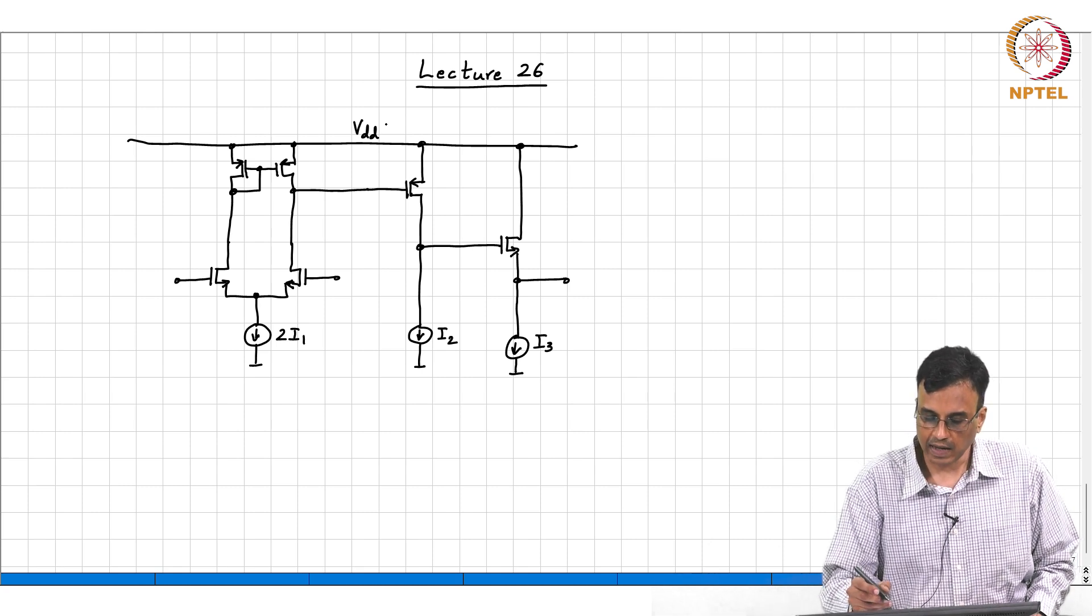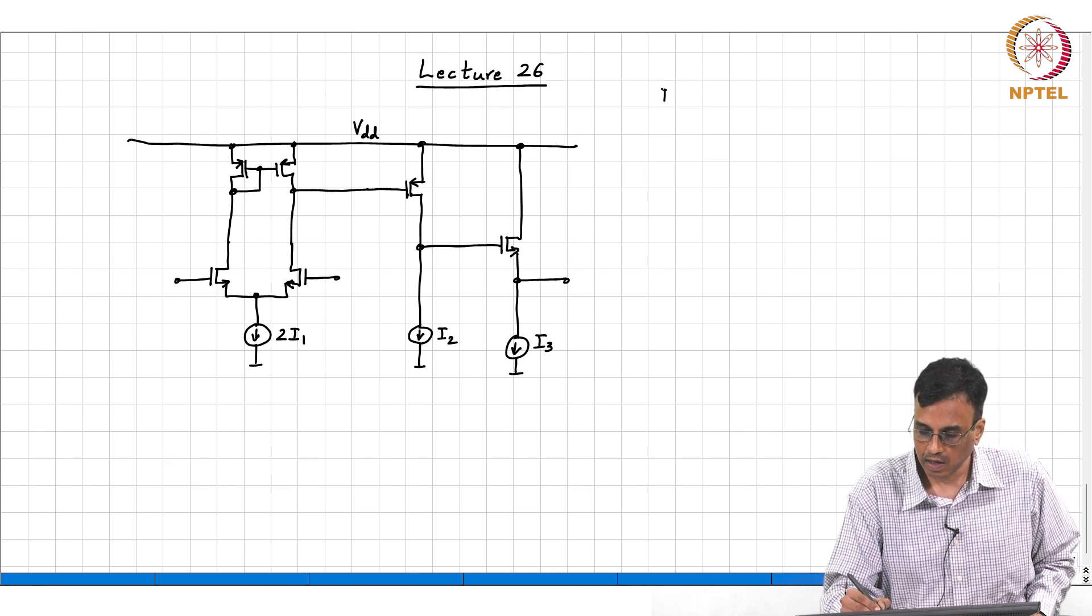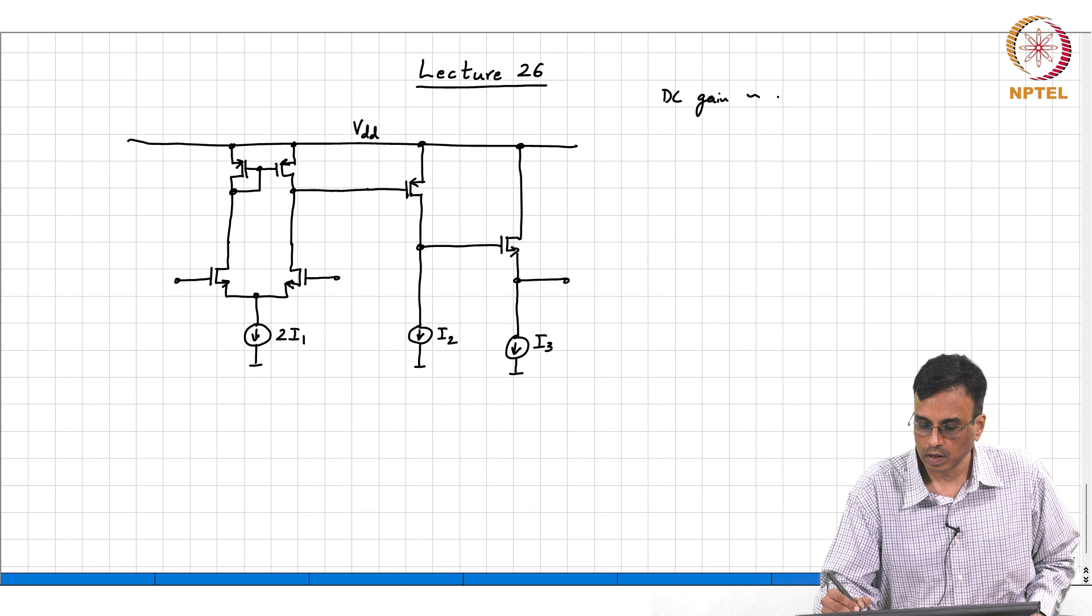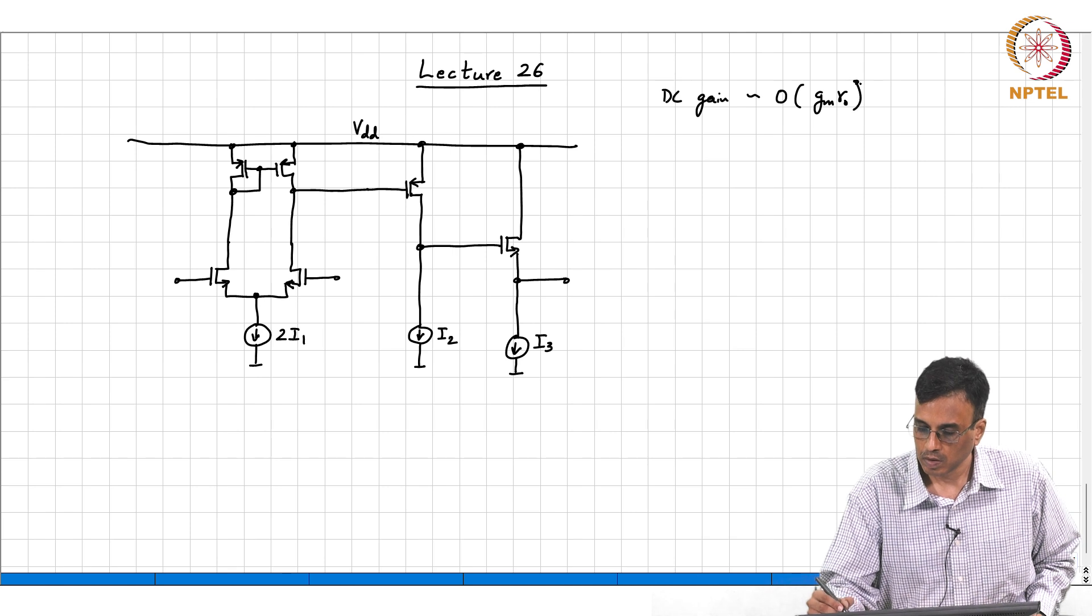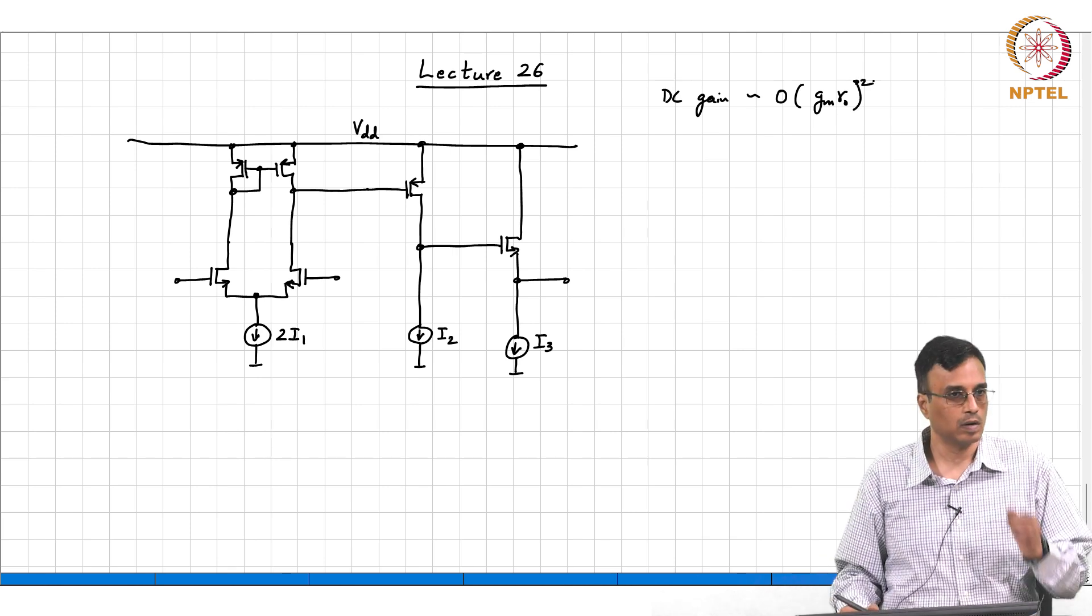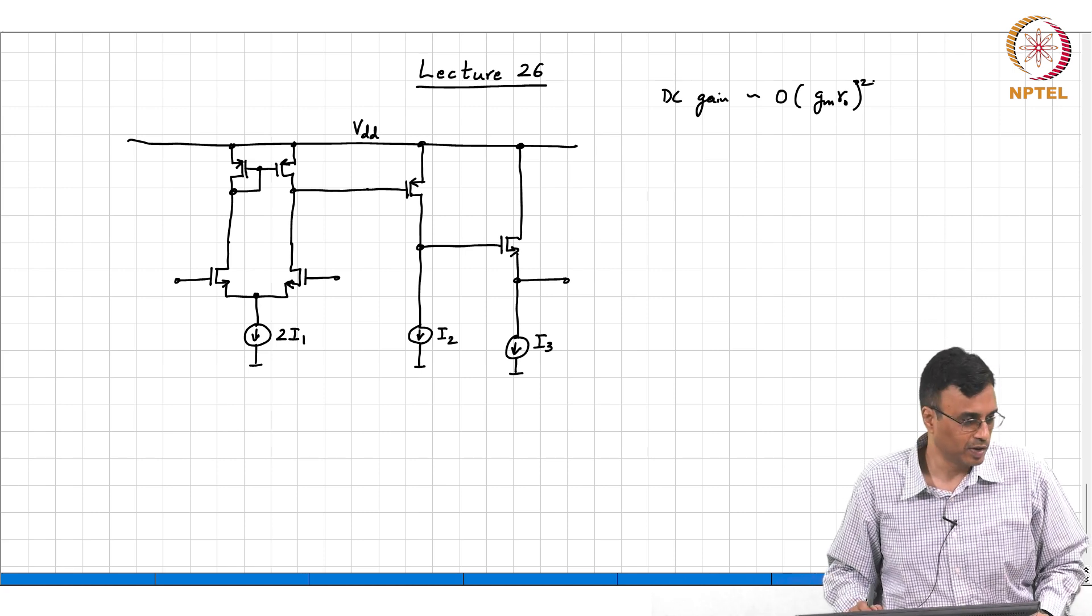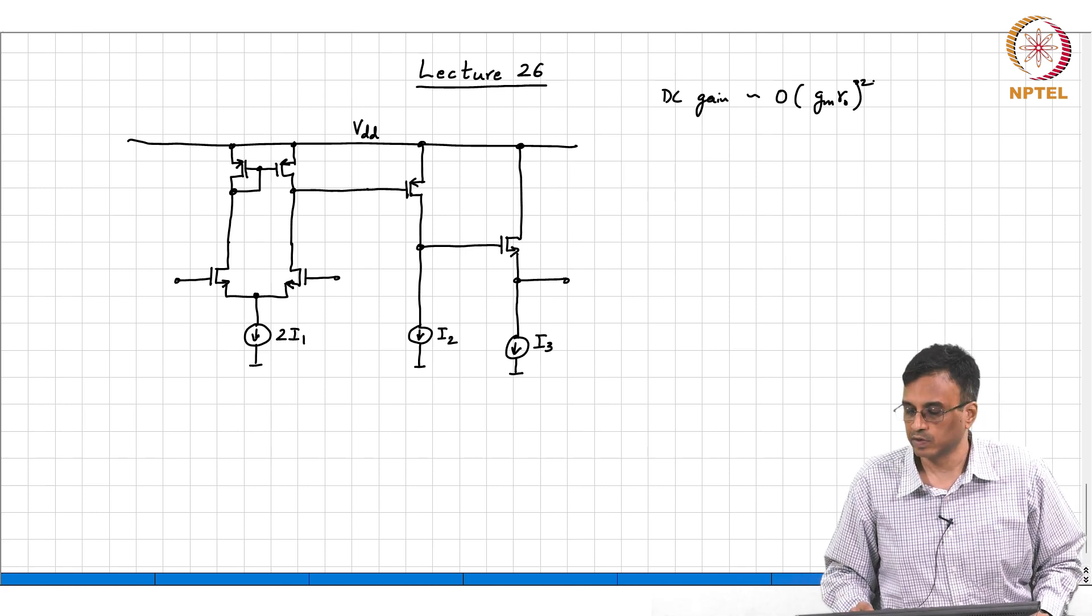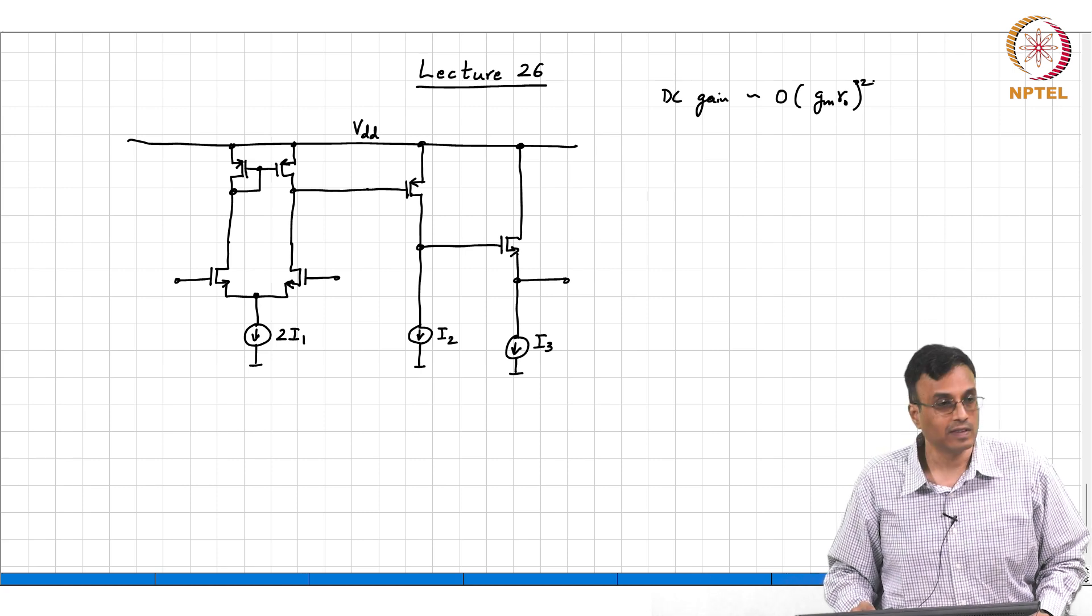And the DC gain is approximately the order of GMRO squared, because that corresponds to 2 stages of gain. When I say order of, there are factors of 2 and 4 missing and so on.